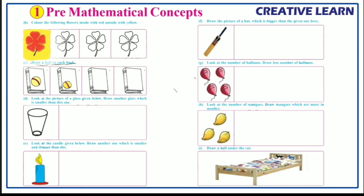Next: look at the picture of the glass given below and draw another glass which is smaller than this one. Here one glass is given — we have to draw a smaller glass compared to it. Let's draw.